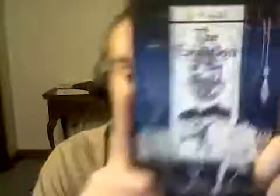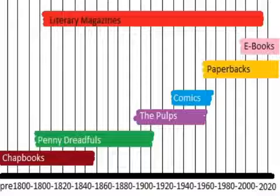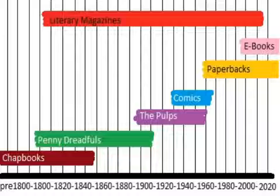In The Evolution of the Weird Tale by S.T. Joshi — a book I've been reading, it's pretty good — he talks about F. Marion Crawford working in a newspaper. Some of his stuff was published in newspapers back in the 1800s. So we could even add newspapers in the 1850s, 40s, 50s, 60s, 70s, 80s — newspapers were a big chunk of the weird fiction.